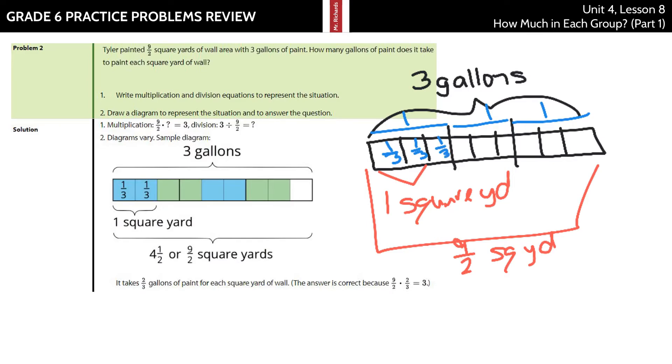And so finally, after breaking this all apart, what does it take to do this one square yard here? Well, one-third plus one-third is two-thirds of a gallon.